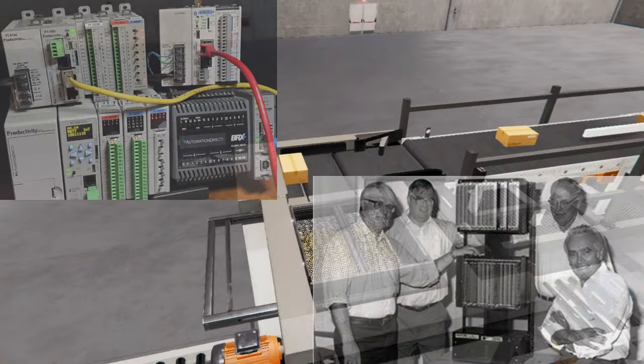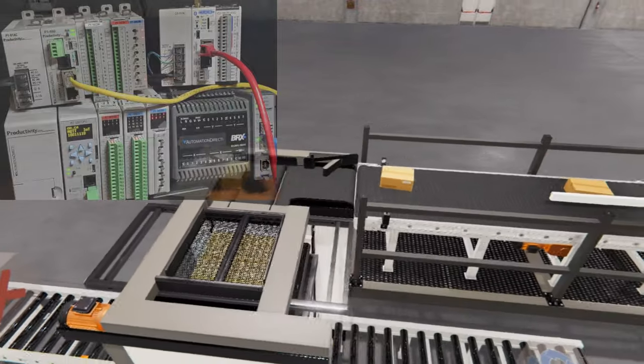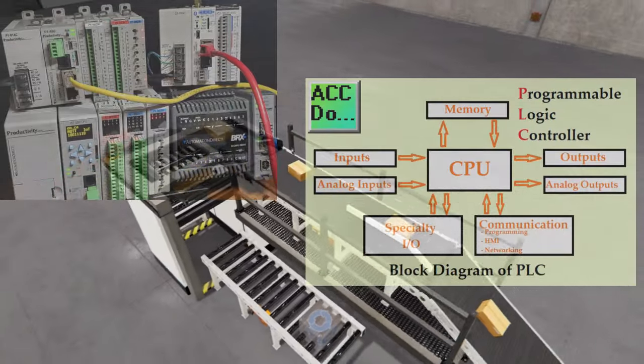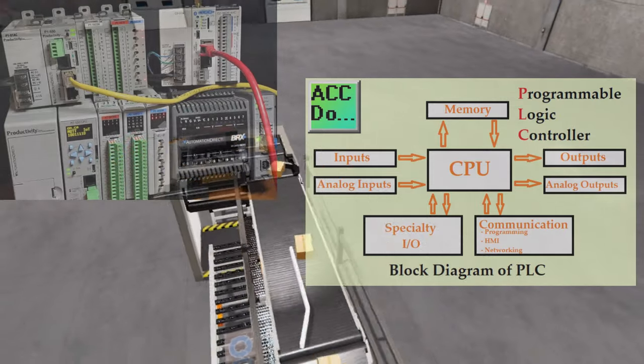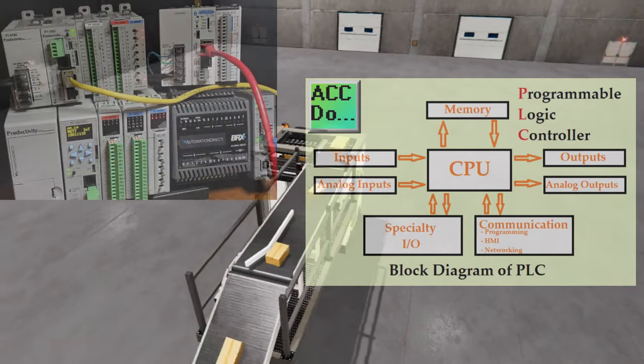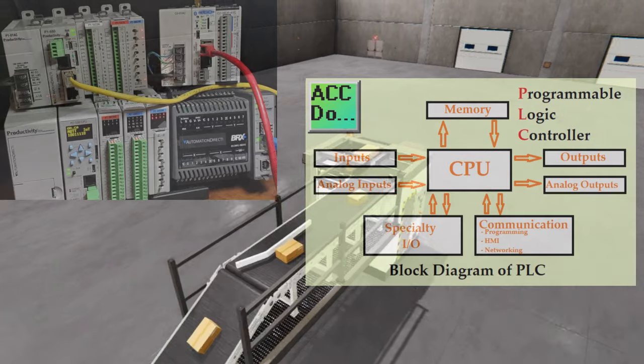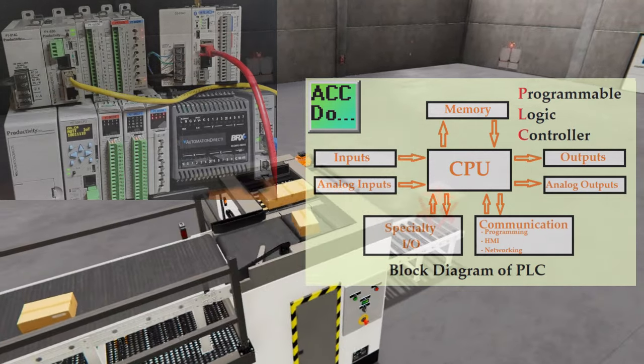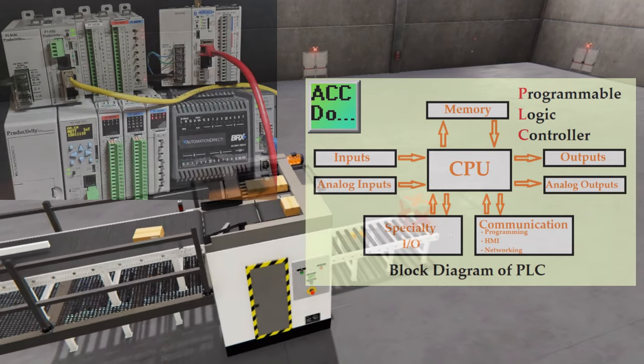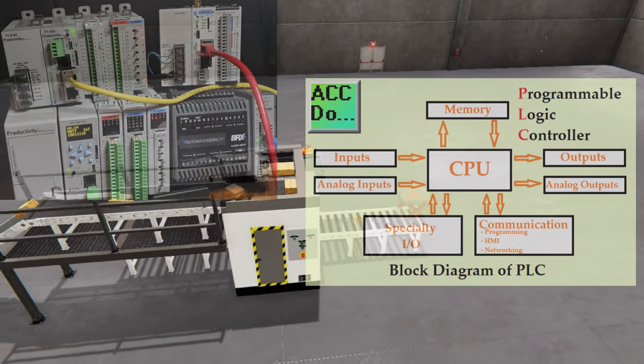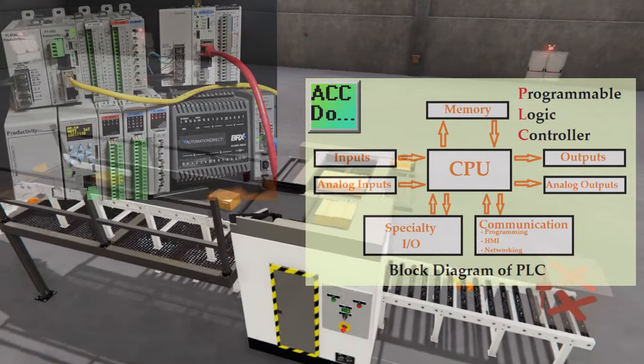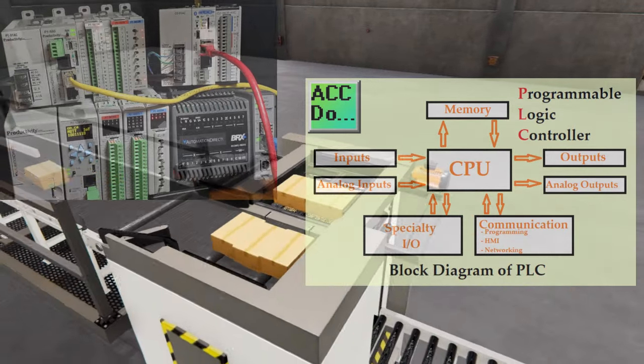Basic structure and components: At its core, a PLC consists of a central processing unit (CPU), input and output modules, memory, and a power supply. The CPU is the brain of the PLC where all the computing and logic operations occur. It communicates with the rest of the system, processes the information, and controls the other components within the PLC.